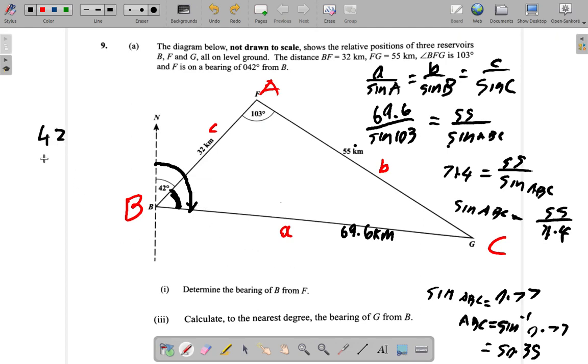So 42 plus 50.35. That's 42, 0.5 and 0.3 is 3 and 0.2, 4 and 5 is 9, so I have 92.35. They said to the nearest degree, so the answer would be 92 degrees for part three.